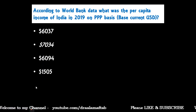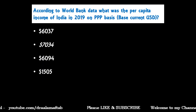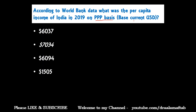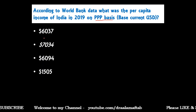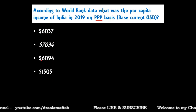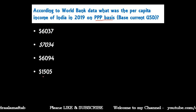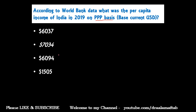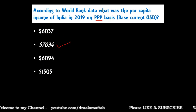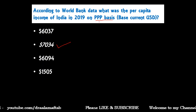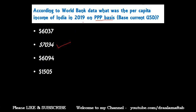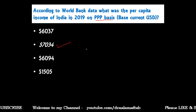Next question: According to World Bank data, what was the per capita income of India in 2019 on PPP basis in current USD? Options are: 6037 dollar, 7034 dollar, 6094 dollar, or 1505 dollar. The correct answer is 7034 dollar. On PPP basis, per capita income of India in 2019 was 7034 dollar.